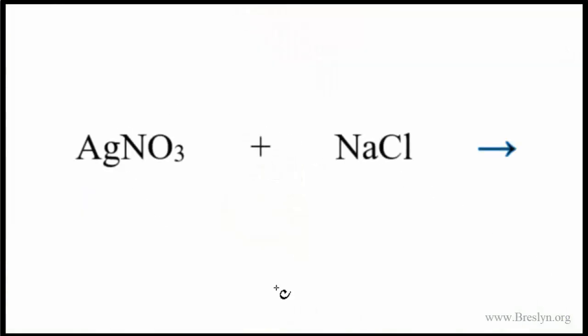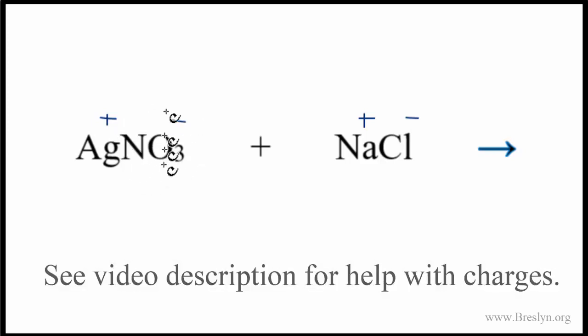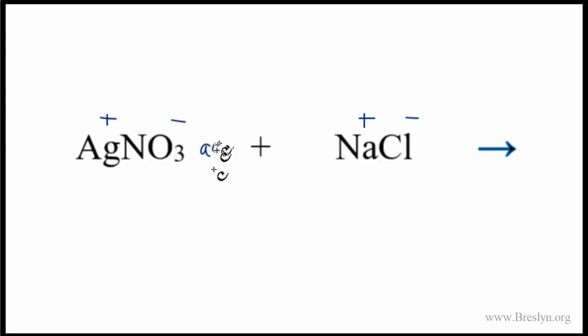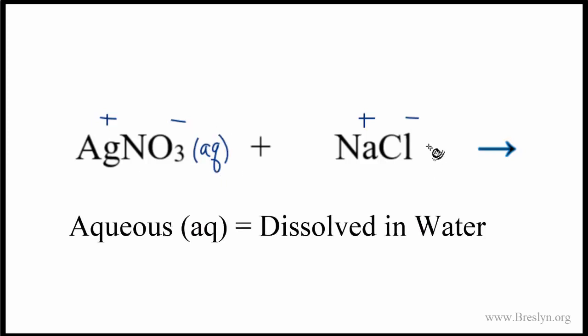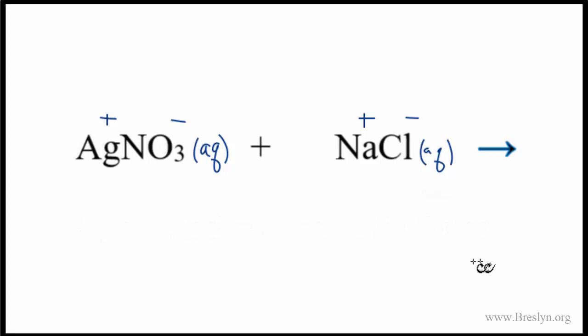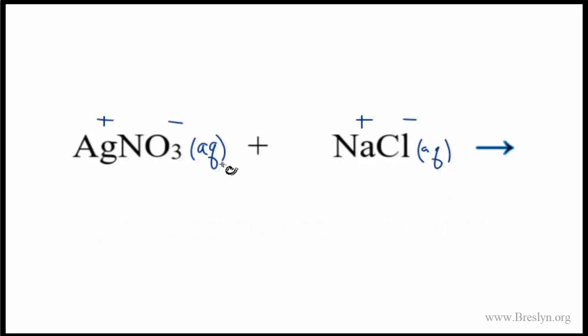Back to our net ionic equation: we have Ag+ NO3-, sodium is Na+ and chlorine is Cl-. You can look these up on the periodic table. For polyatomic ions like NO3-, you need to look those up on a chart or have memorized that the nitrate ion has a one minus charge. We have our charges, and they're dissolved now, so we can put AQ for aqueous after each one.